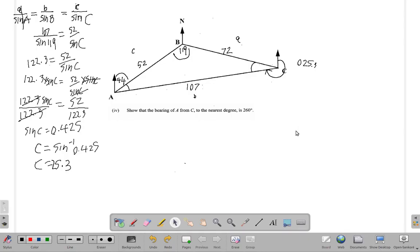Okay, so we are continuing looking at question part four. We found earlier that angle C right here is 25.3 degrees. Now they're asking for this angle right here. We're going to have to show that this bearing is 260 degrees.